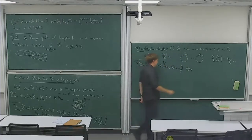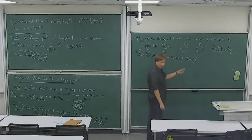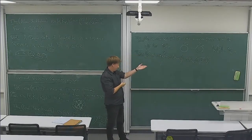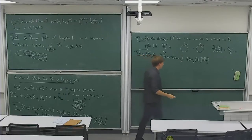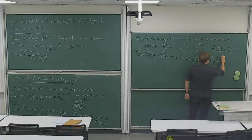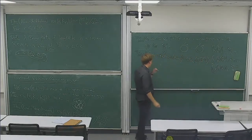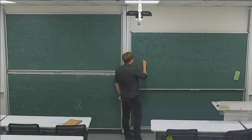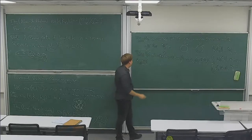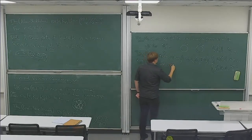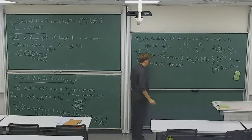What did they prove? The extremal number EX_R(N, Berge-P_K), forbidding a Berge path of K edges in an R-uniform hypergraph, equals: N/K times K_R if K is at least R+1, or N/(R+1) times (K-1) if K is at most R. They left the case K equals R+1, which was worked out by Woody, D'Ali, and Füredi.